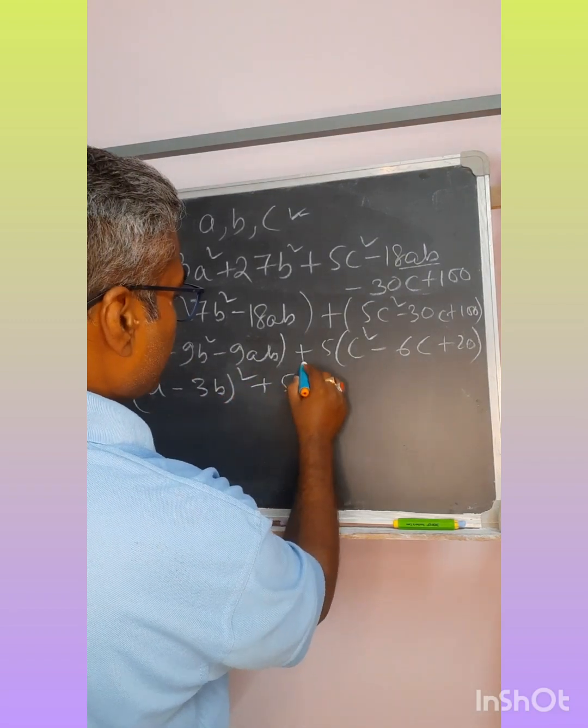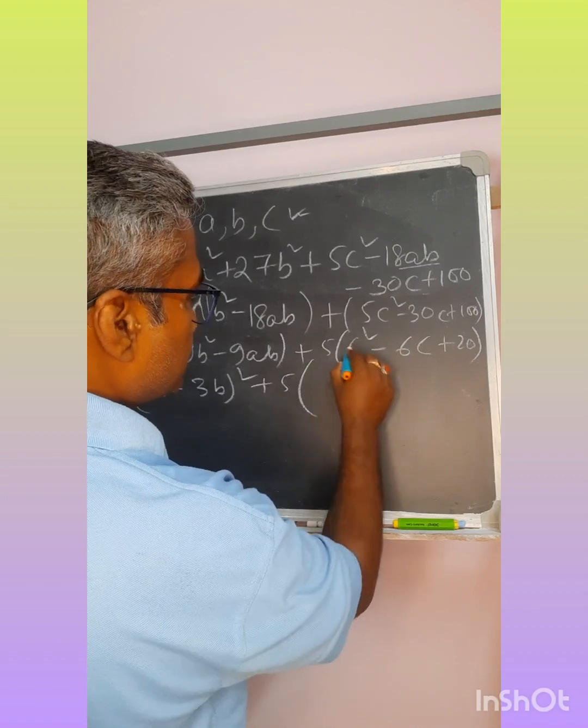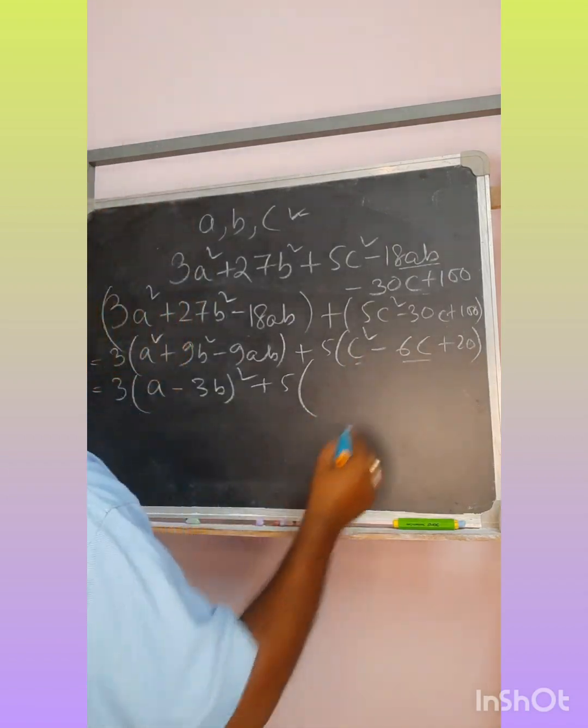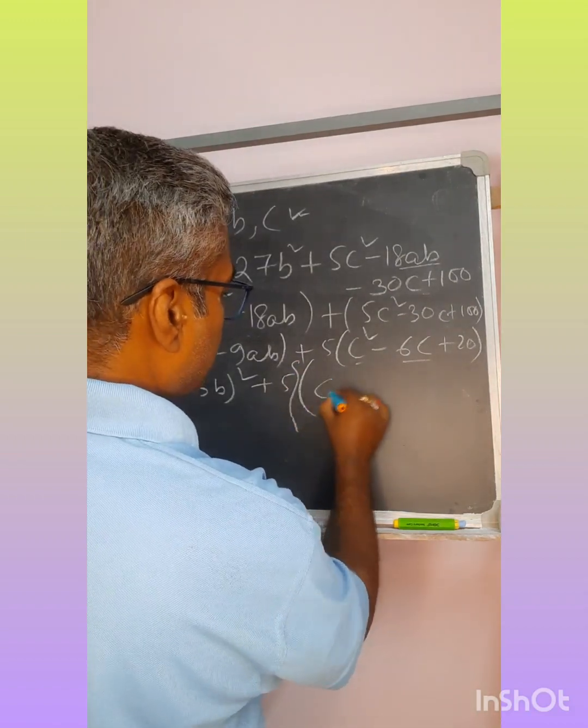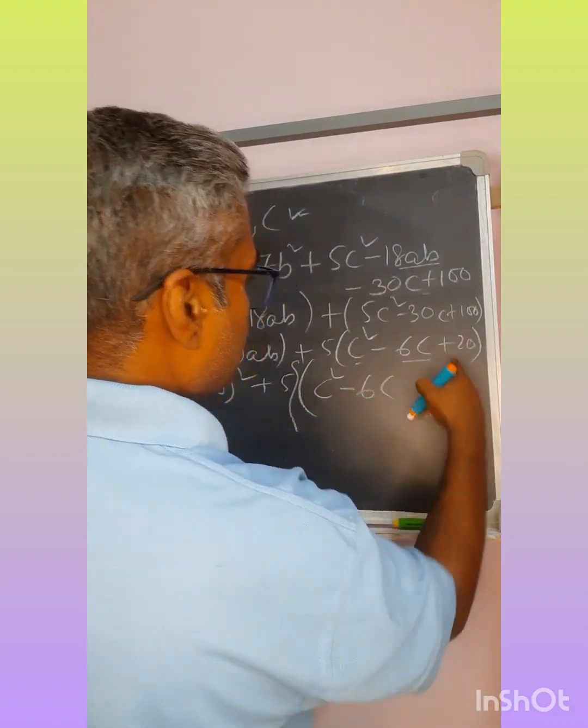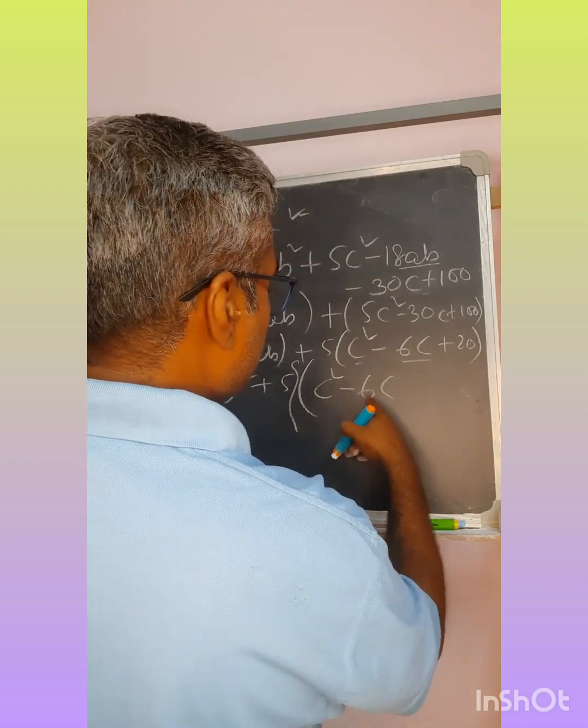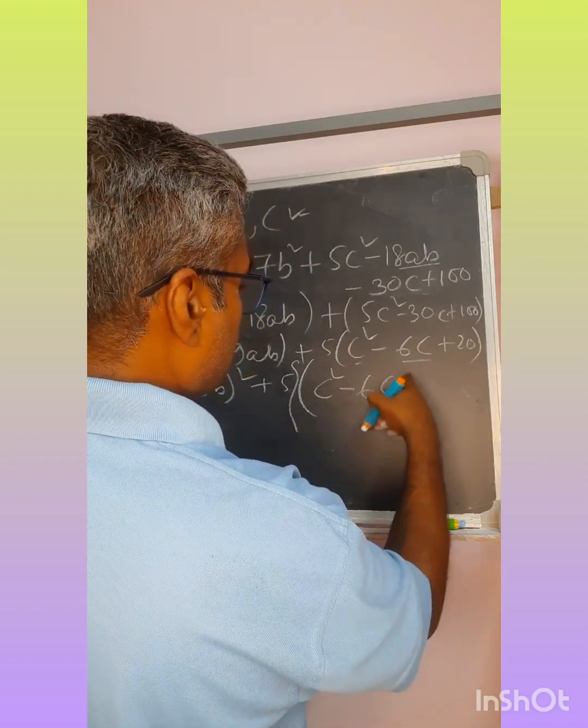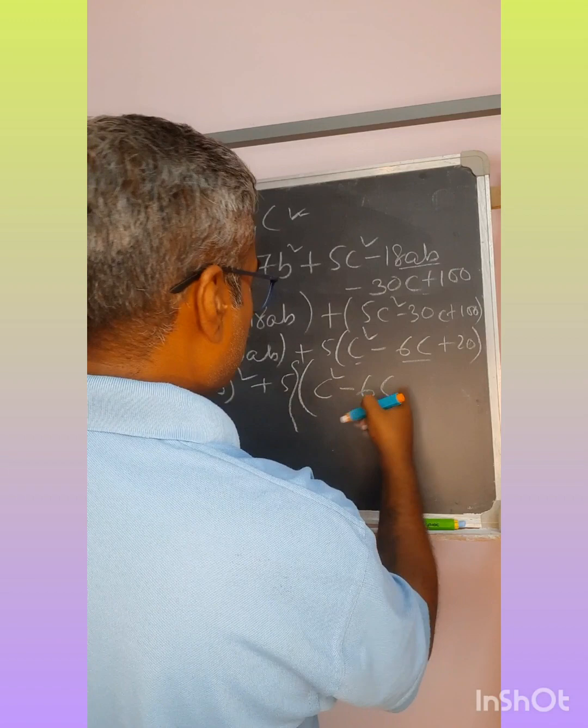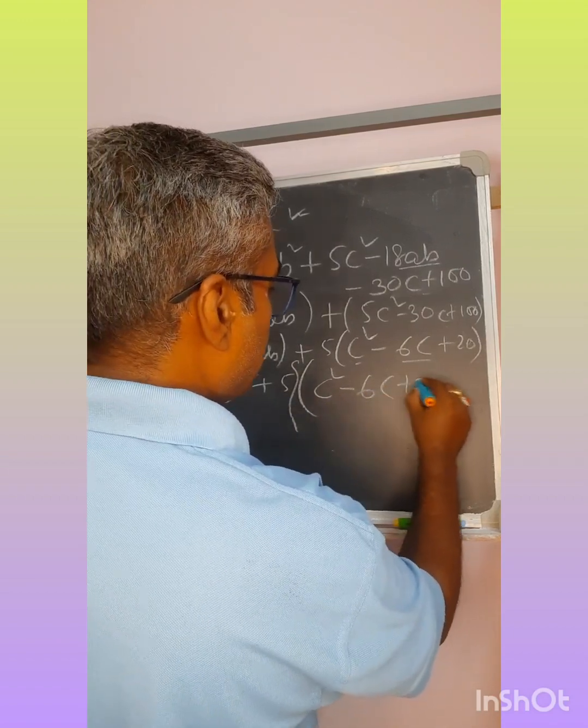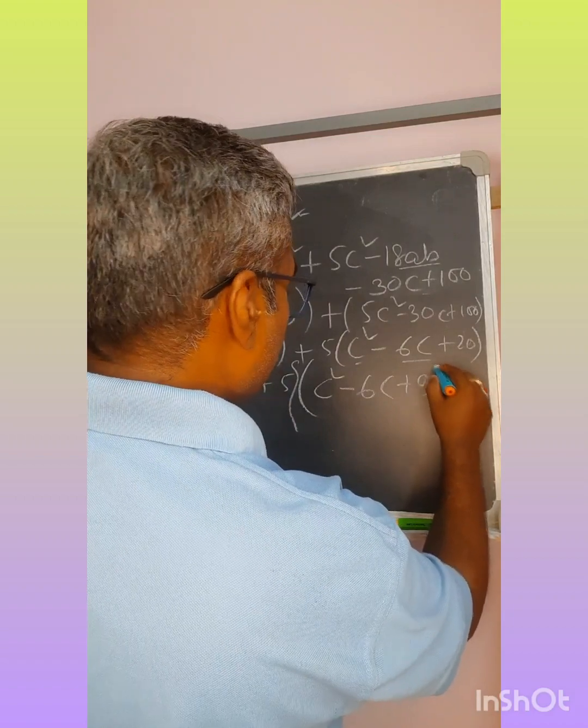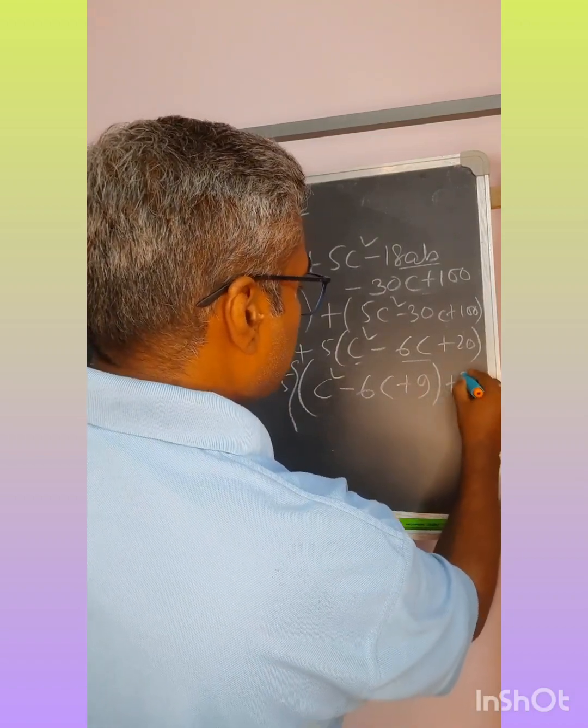If I want to make it square, C² - 6C. If I have to make square of that, I have to break this 20 in such a way that I will get the constant required to make it square. C² - 2×C×3, that means 9 has to be adjusted there and the remaining you have to keep plus 11 here.